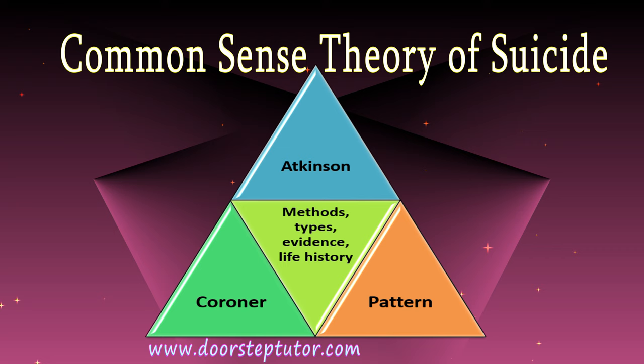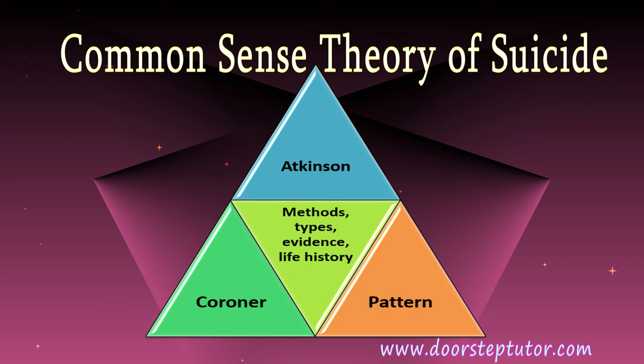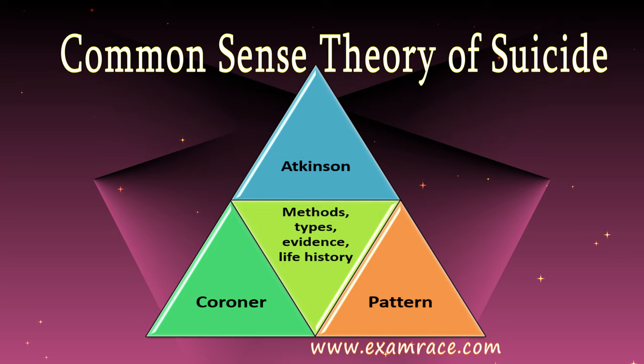This can be further understood by Atkinson's common sense theory of suicide, where he studied coroners and understood that anybody can recognize the hidden pattern when there is a suicide. If you witness a suicide near your place, you can understand the method used, the type of thing done — there can be evidence like notes, life history, or that the person was really unwell, frustrated, or mentally unwell. There is a definite pattern, and because of that pattern we can understand by common sense and experience what has happened and why.